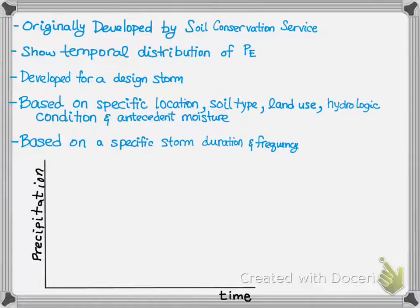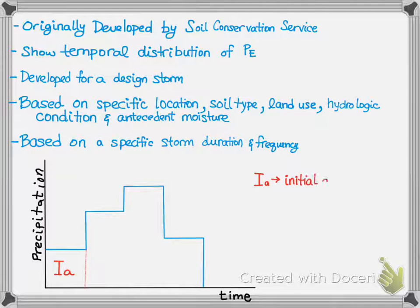So, imagine you have a hydrograph, as shown, with precipitation on your y-axis and time on your x-axis. You then will see you still have your initial abstractions, Ia, which occurs before you see direct runoff.